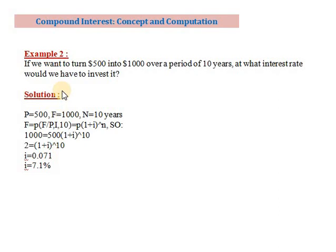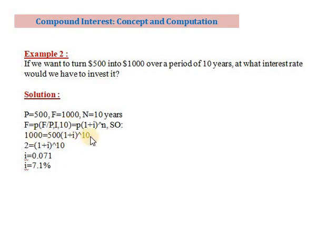How do we turn $500 into $1,000 over 10 years — at what interest rate? Given P equals 500, F equals 1,000, and n equals 10, we need to find i. Substituting into the equation: 1,000 equals 500 times (1+i)^10, so 2 equals (1+i)^10. Solving gives i equals 0.071, or 7.1%.